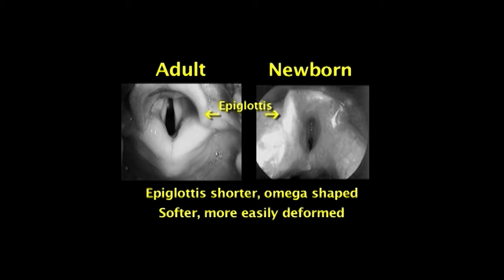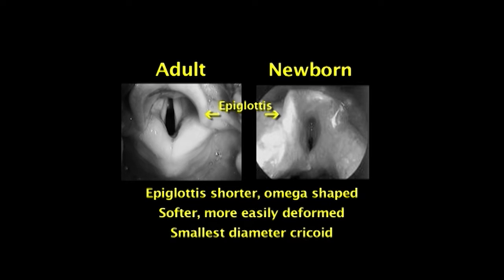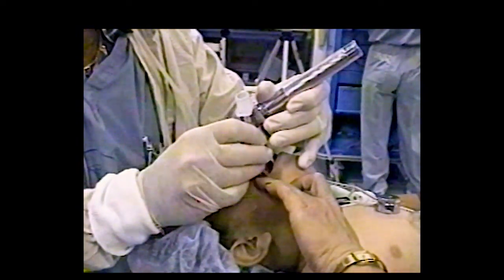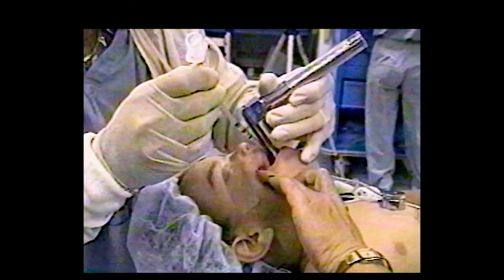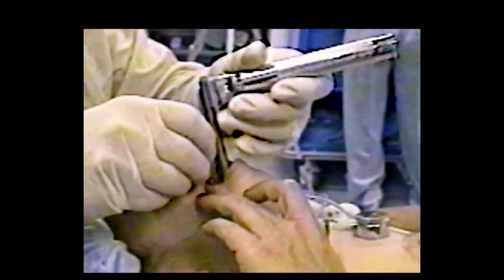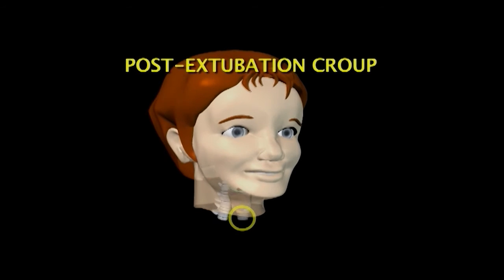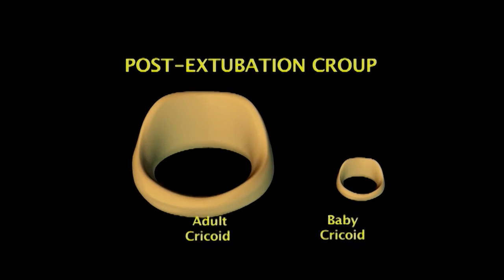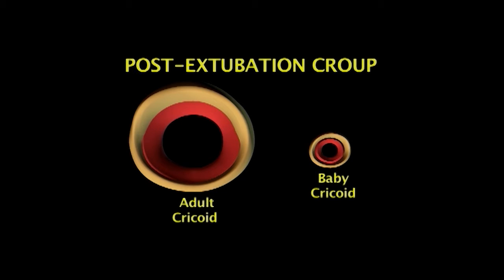In the adult larynx, the gap through the vocal cords is the smallest diameter. However, in a young child, the smallest diameter is the cricoid cartilage, which is below the vocal cords. This means that you can occasionally pass an endotracheal tube through the vocal cords, but then not through the cricoid ring into the trachea. Never force a tube to pass; instead switch to a smaller tube. The cricoid's narrow, rigid, ring-shaped bottleneck also increases the risk of airway obstruction when swelling occurs. Minimal swelling can cause tracheal obstruction because the larynx and trachea are so small. One millimeter of circumferential swelling in an adult with a 10 millimeter trachea causes only a 20 percent obstruction. The same one millimeter circumferential edema in an infant with a three millimeter trachea causes a 70 percent obstruction.